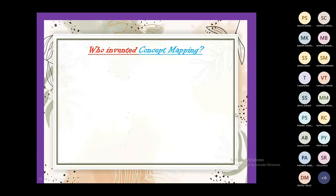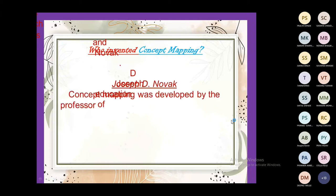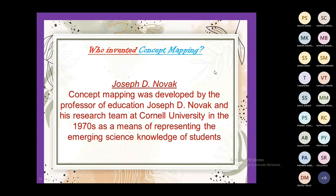Now, who invented concept mapping? Each and everything in the world is invented by someone, so we should know about that. Concept mapping was developed by Professor of Education Joseph D. Novak and his research team at Cornell University in the 1970s, as a means of representing the emerging science knowledge of students. It is not only for science — though he started it for science — but it is really very helpful for any subject.